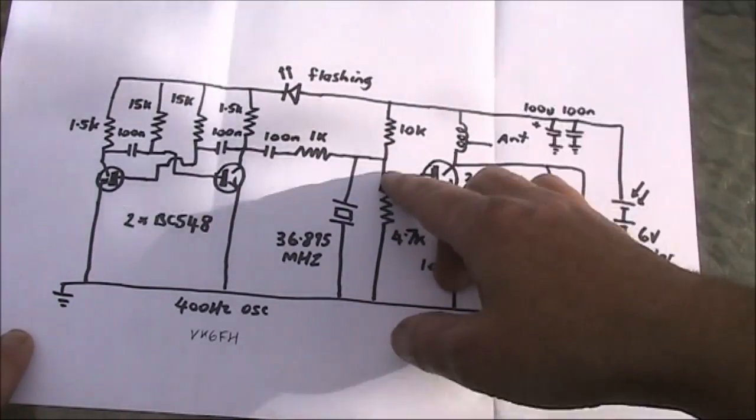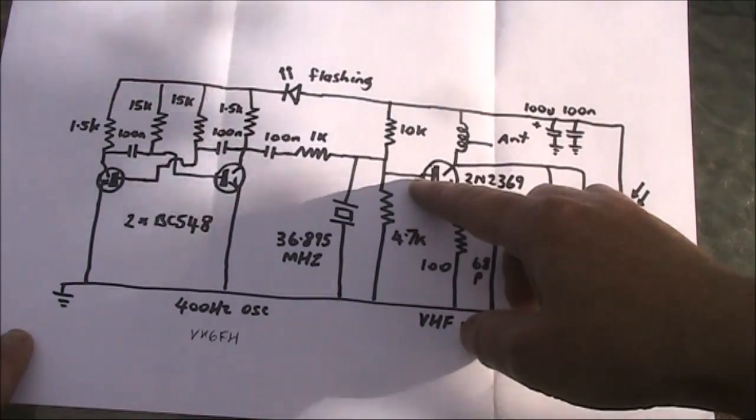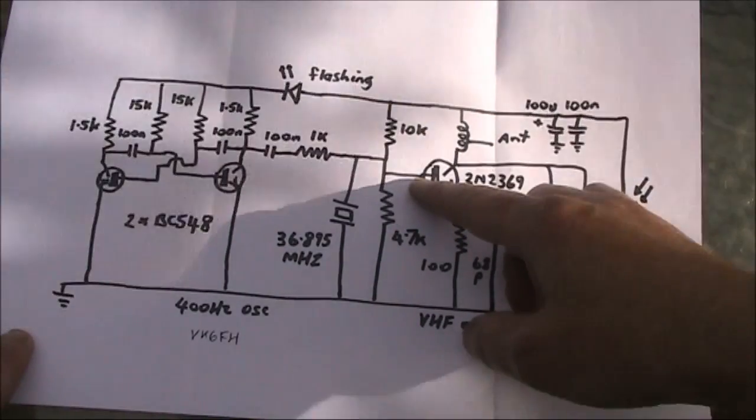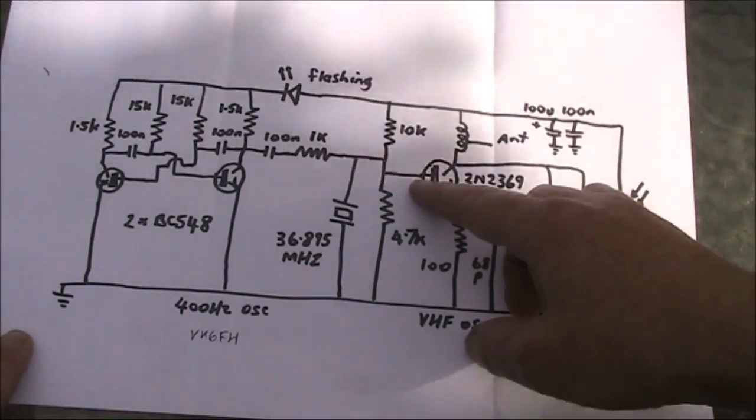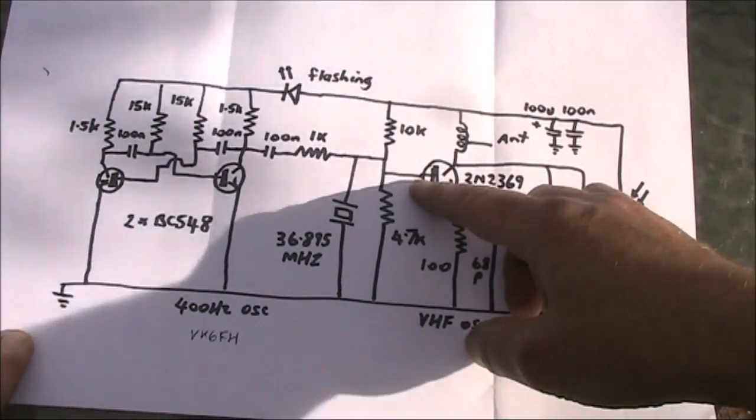The 400Hz oscillator provides some modulation. It is low level, but it's good enough for this purpose. That modulation allows the beacon to be heard on an AM receiver.